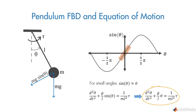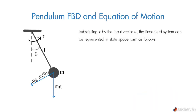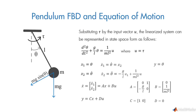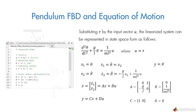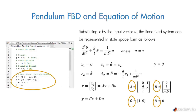Next, we can represent the system in state space form where we choose the first state as angular position and the second one as angular velocity. We define the parameters and state space model in the script.